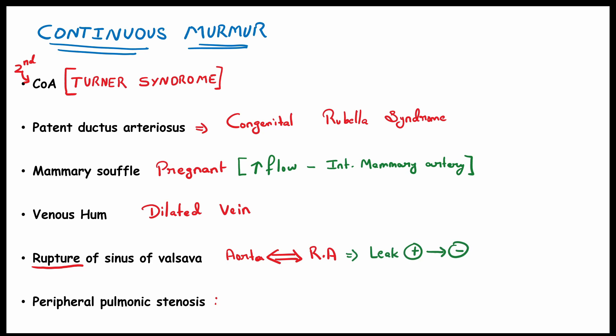And the last is peripheral pulmonic stenosis. Remember I said peripheral not valvular. In valvular pulmonic stenosis presence of ejection systolic murmur. But in peripheral pulmonic stenosis presence of continuous murmur which happens due to narrowing of the pulmonary artery.